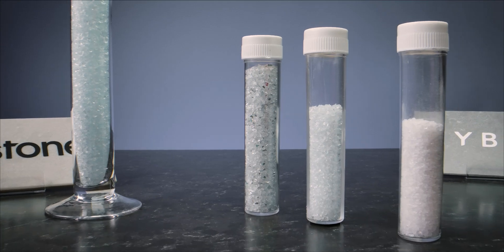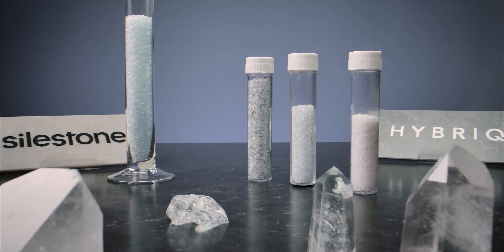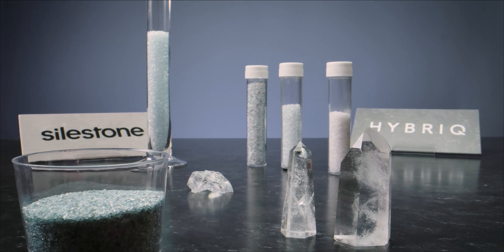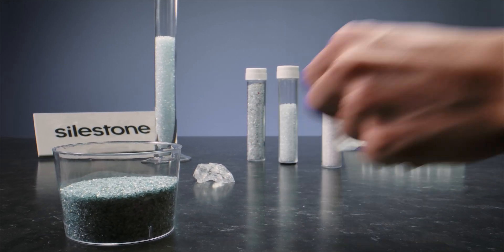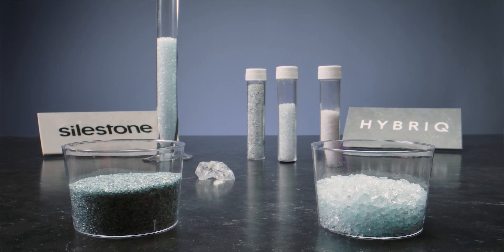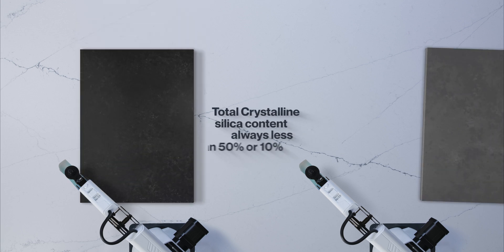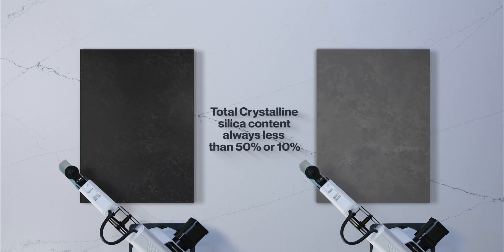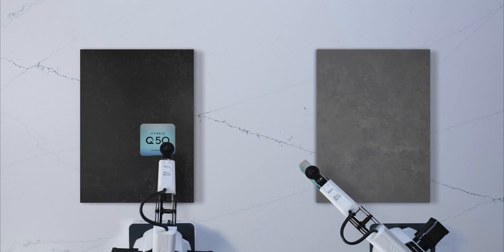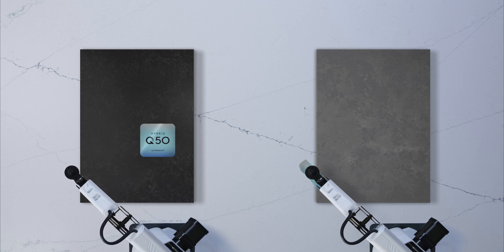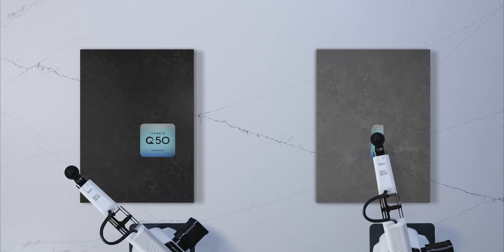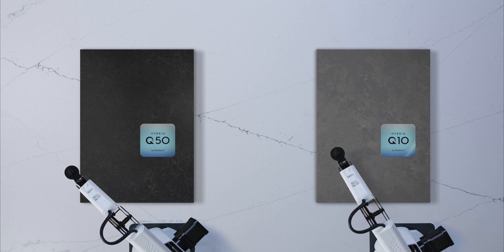This new formula results in a significant reduction in the presence of crystalline silica in the composition. Depending on the color, all Silestone products marked with HybriQ technology have a crystalline silica content of less than 50% or 10%. All our slabs are labeled with Q50, maximum 50% crystalline silica, or Q10, maximum 10%, to help identify it easily.